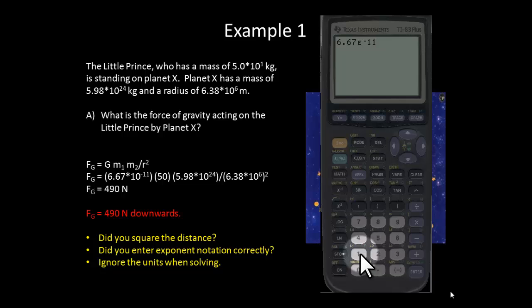So, 6.67E to the minus 11th, times 50, times 5.98, again, second E to the 24, divided by 6.38E to the 6th, and then I will just square that radius, that distance between the two centers.